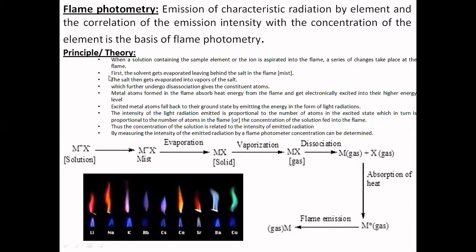In flame photometry, the element to be analyzed is prepared in the form of a suitable salt solution and aspirated into the flame. The following series of changes take place. The solution containing MX — where M stands for metal ion and X for halide ion — is converted into the form of a mist, meaning very small droplets. When these droplets come into contact with the flame's thermal energy, the solvent evaporates, leaving behind MX as a solid.